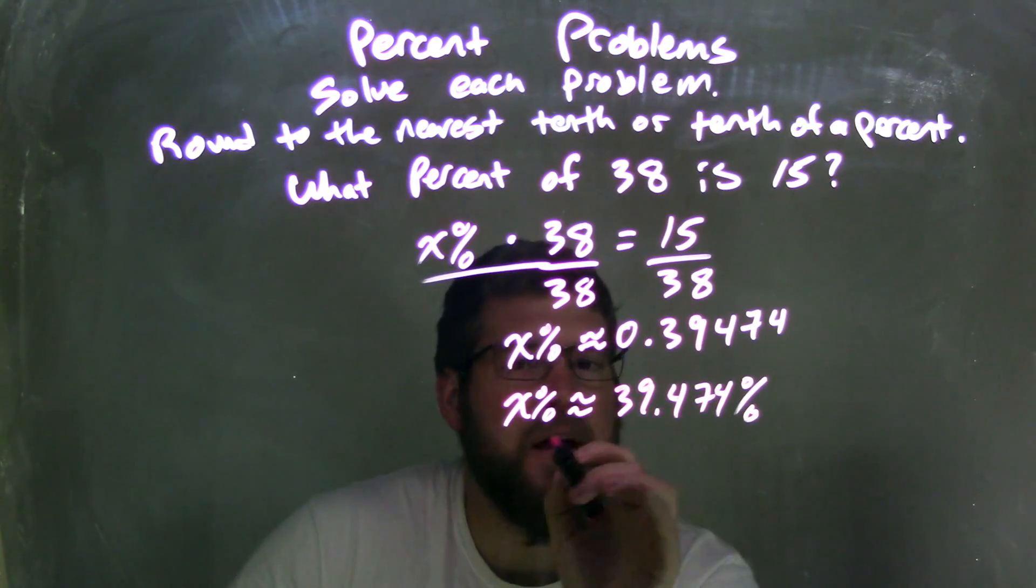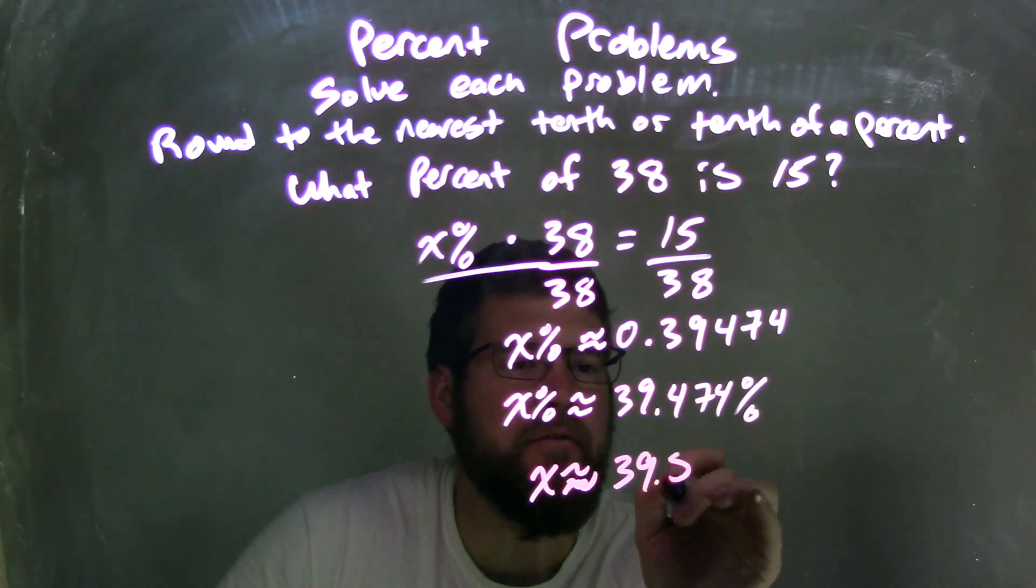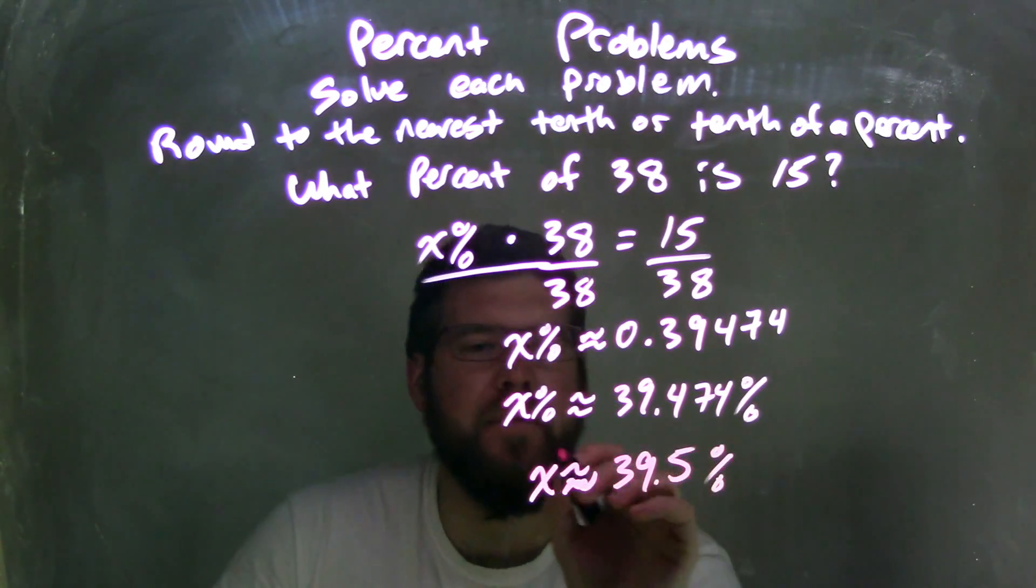So when we round to the nearest tenth, x is approximately, what I'm looking for here, 39.5%. And that's our rounded answer.